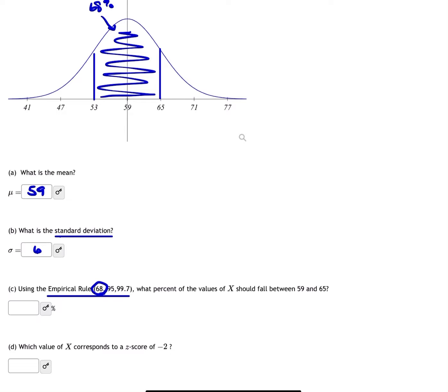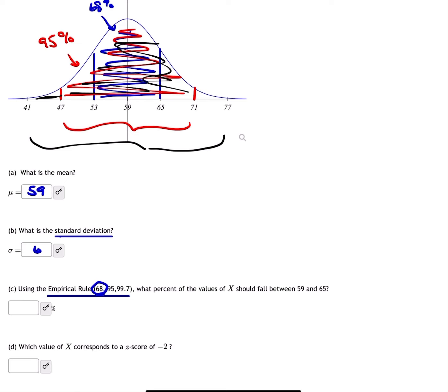If you go out one more, so you're two standard deviations away, all of this would be 95% of your data. And if you go out three standard deviations to 41 and 77, that's going to be 99.7% of your data.